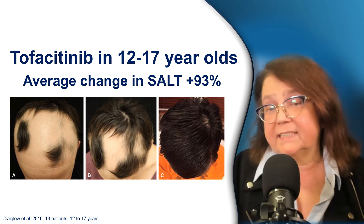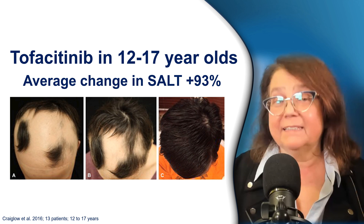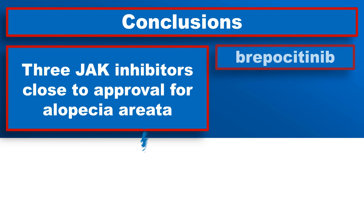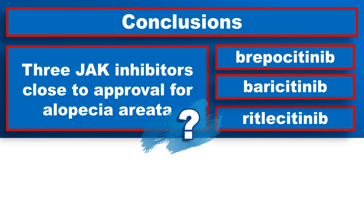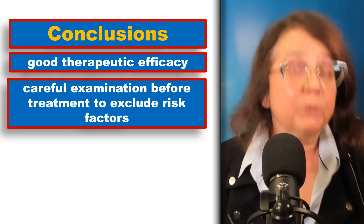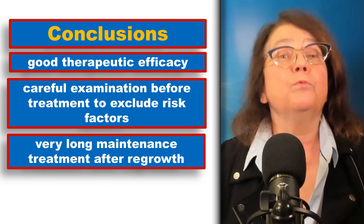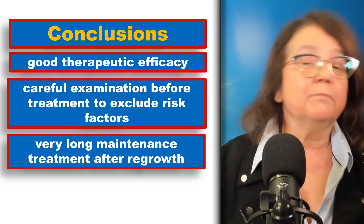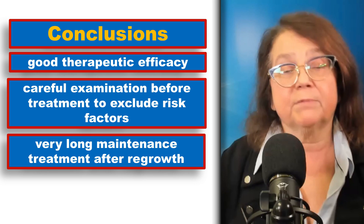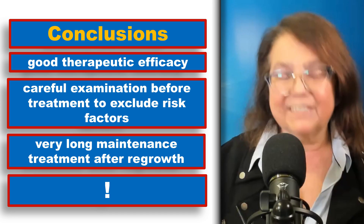As an example, a study of tofacitinib in adolescents showed a nice result of hair regrowth in alopecia areata, with an average improvement in this group of 93%. In conclusion, there are three JAK inhibitors close to being approved for alopecia areata — hopefully by 2023 or 2024 — and two JAK inhibitors currently available but off-label. JAK inhibitors have good therapeutic efficacy. Careful examination of patients before initiating therapy to exclude risk factors is needed, and in alopecia areata, long maintenance therapy is required to prevent relapse. Most importantly, we are likely to witness the approval of the first drugs dedicated specifically to alopecia areata.